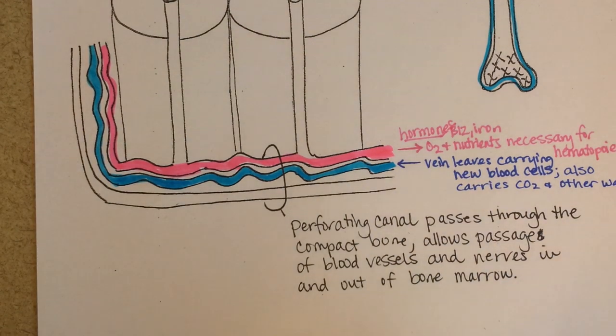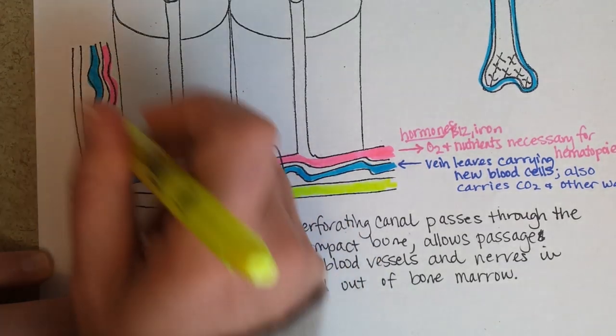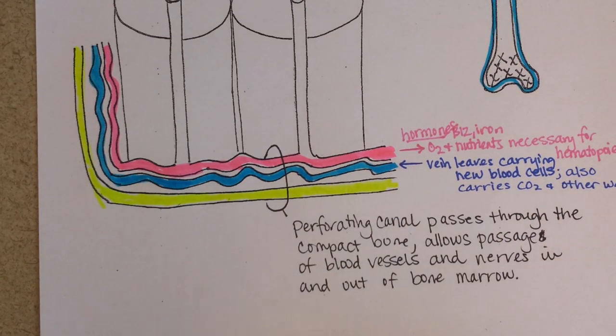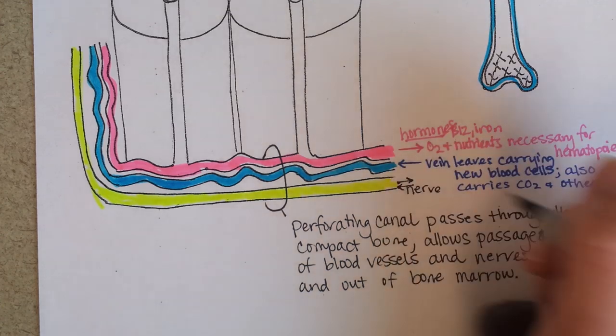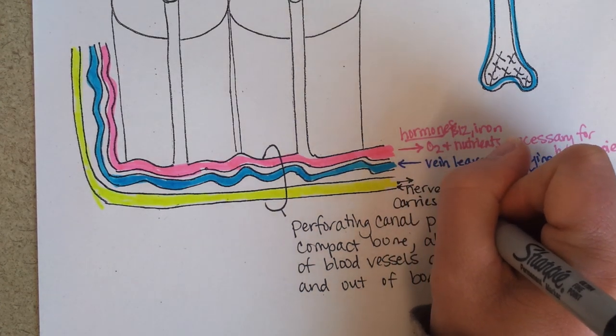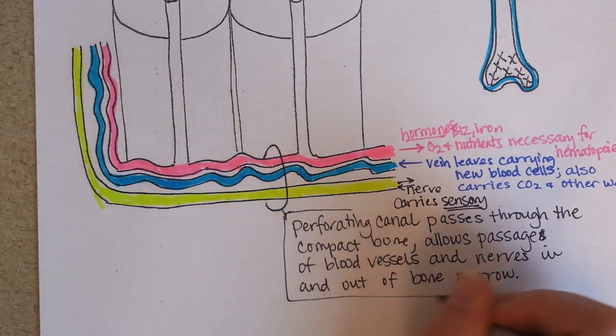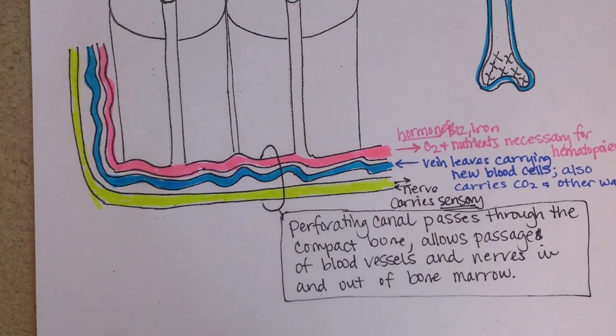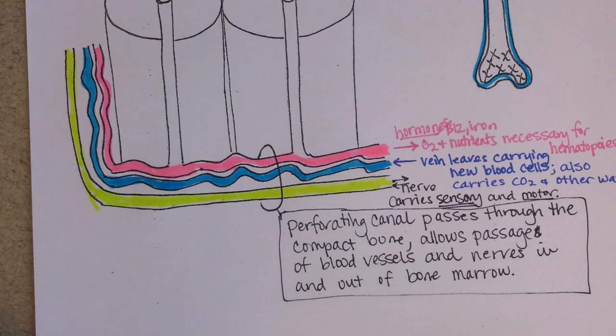Let's use blue for that. It's going to carry all of those new blood cells and platelets. Of course, it's also going to be carrying away the wastes like carbon dioxide and other metabolic wastes, maybe lactic acid or something. Okay. Then there's the nerve supply. We can use yellow for that. So you've got arteries, veins, and nerves coming through tunnels in the bone called perforating canals. The nerve is going to have both directions, right? Sensory and motor.